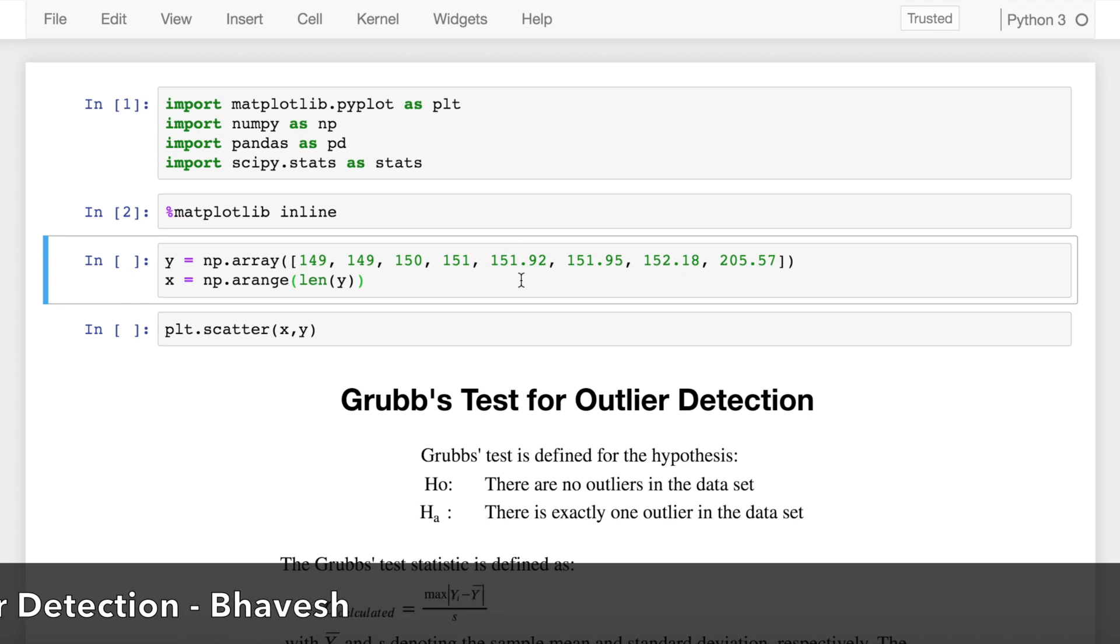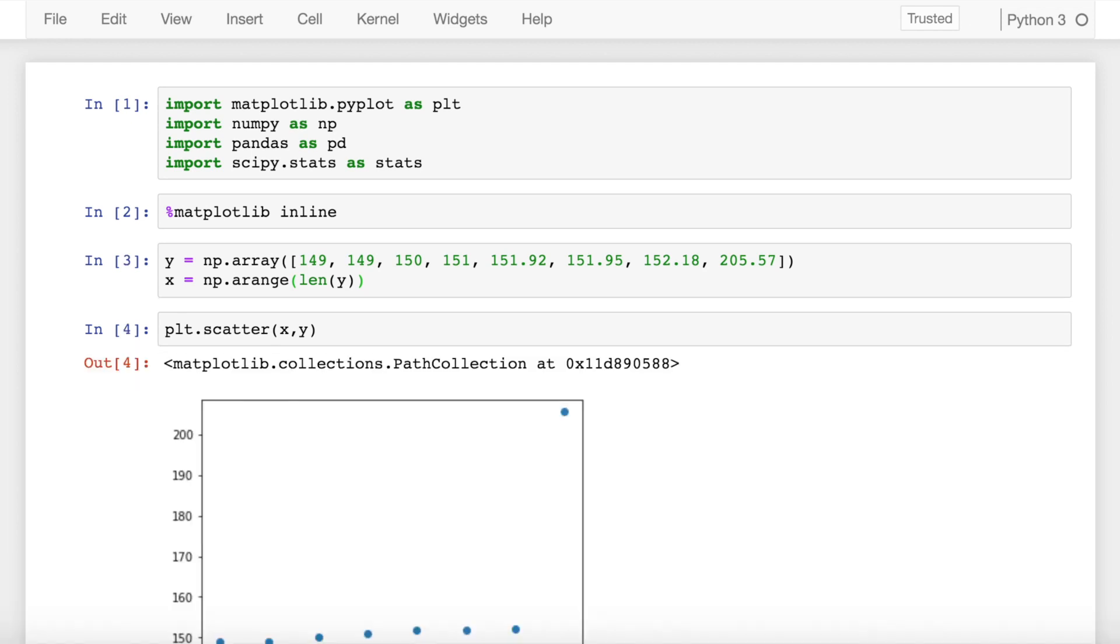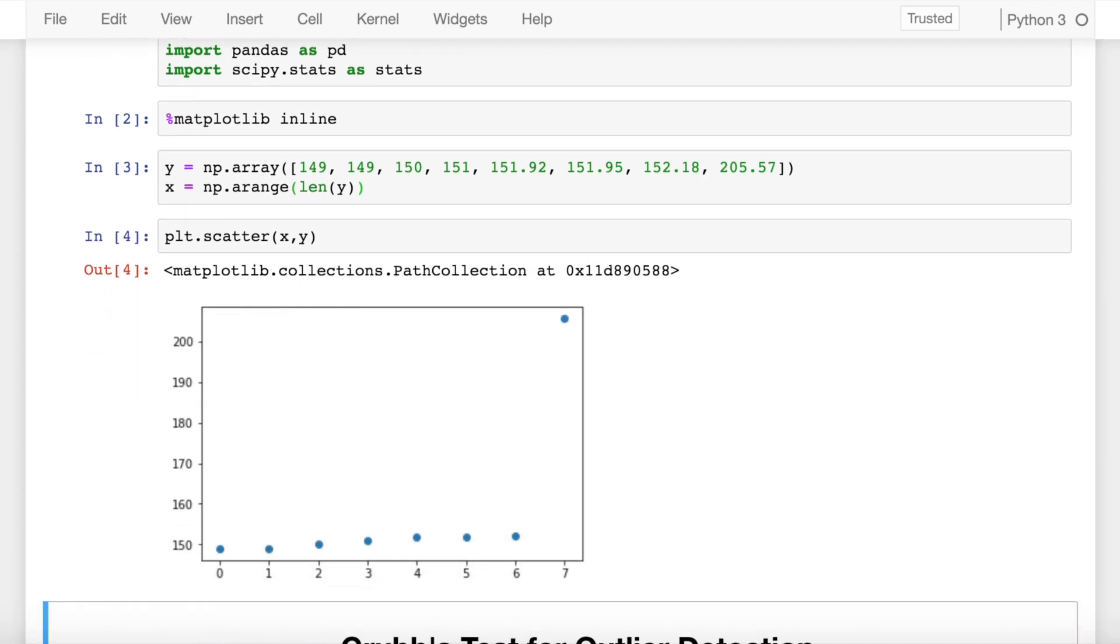I've defined a simple array called y which has values between 149 and 205. I'll show the scatter plot to make the idea more clear as to how the distribution is. So I have most of the values concentrated around 150 and I have an outlier-like point at 205 which is visible from the plot.